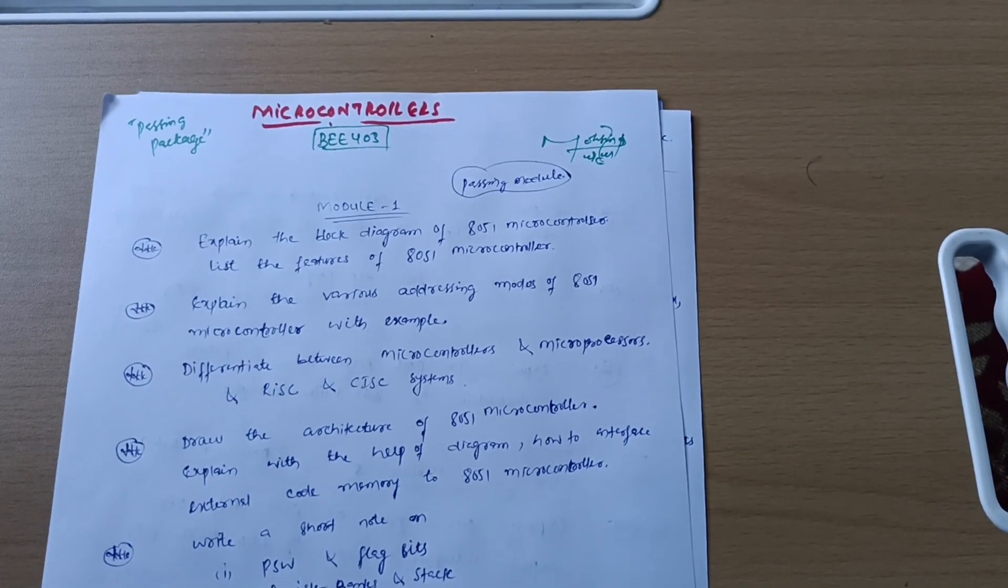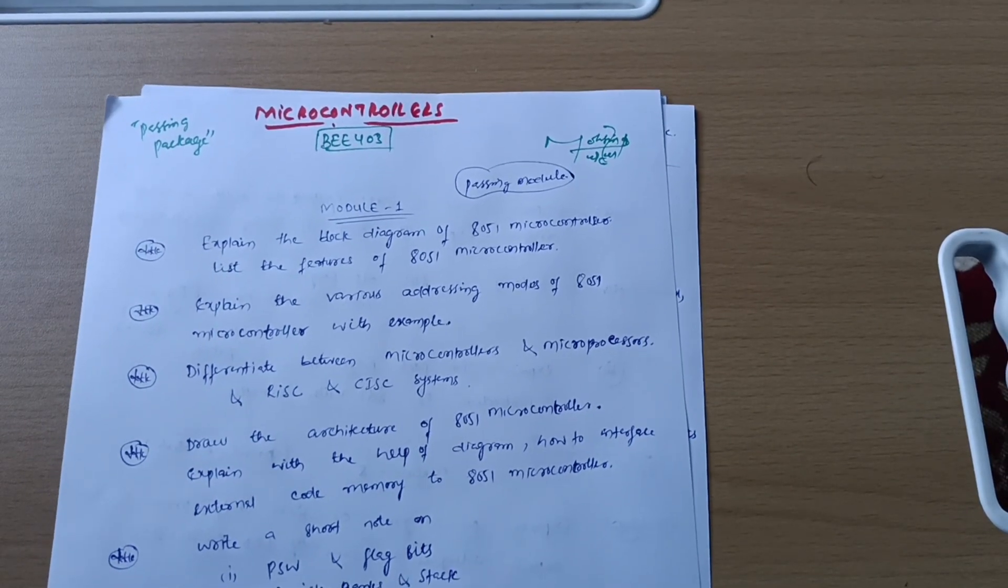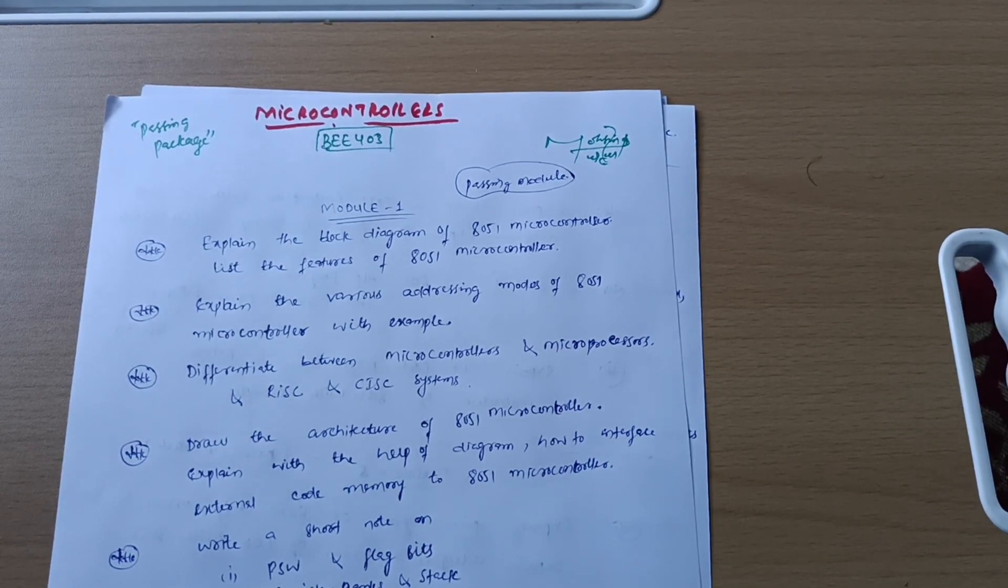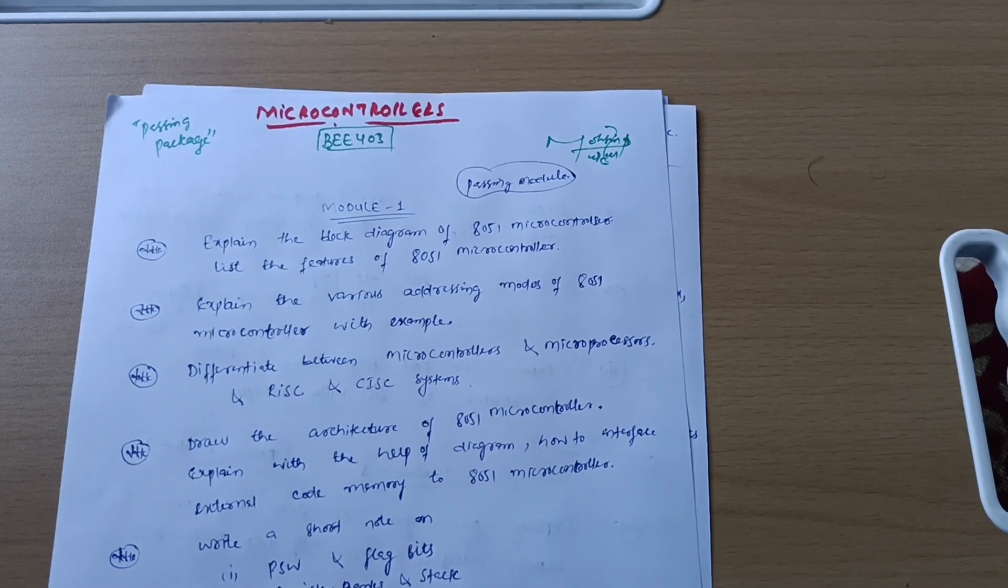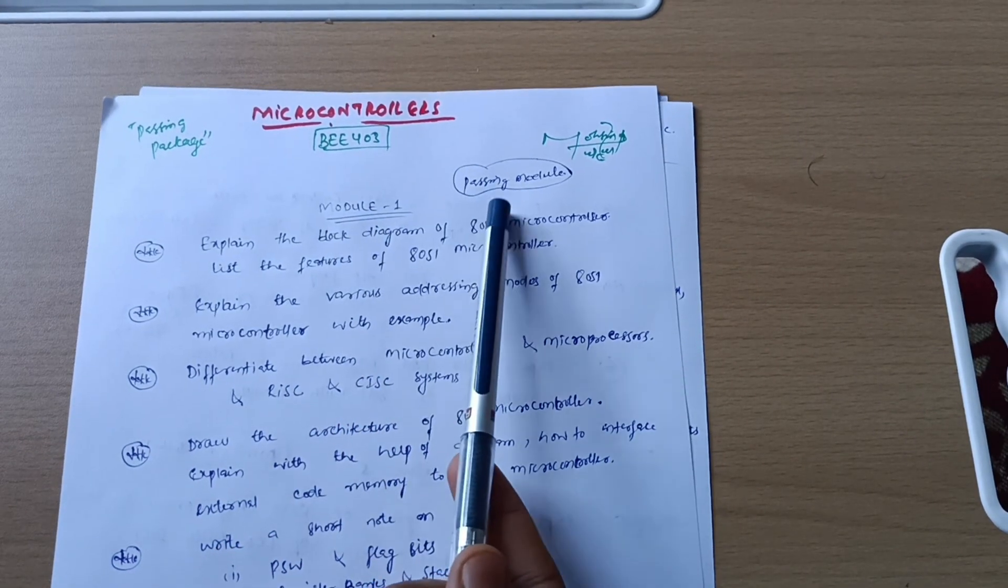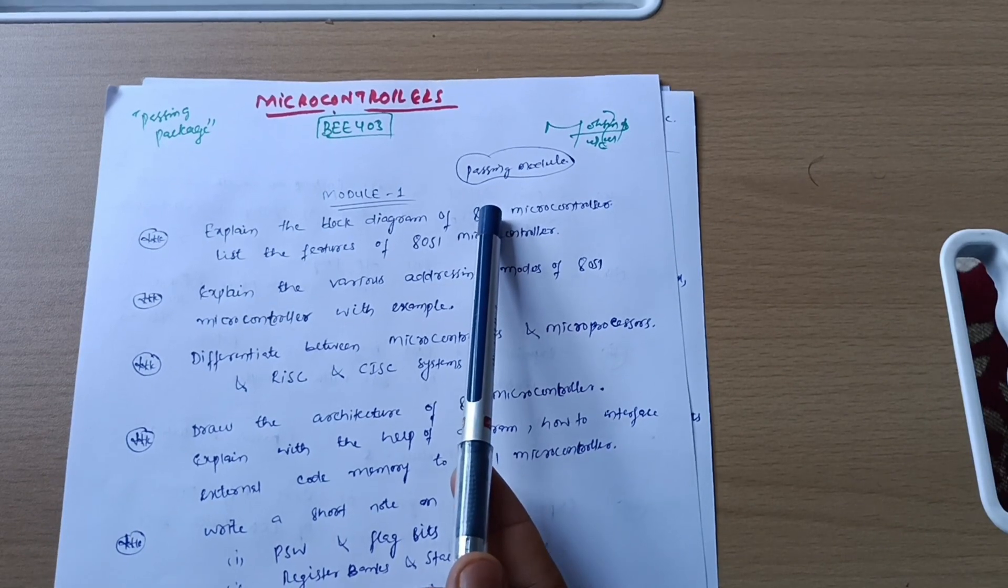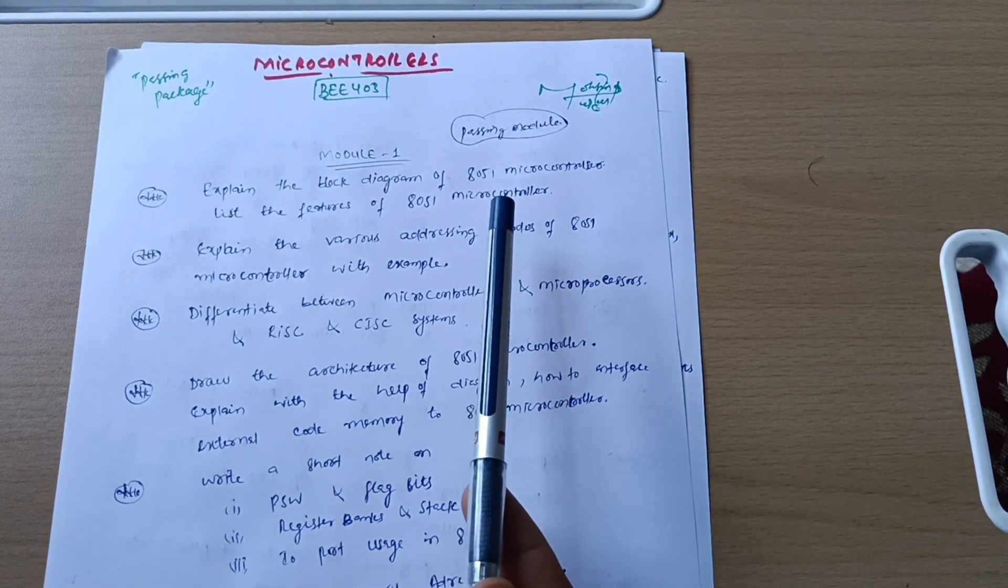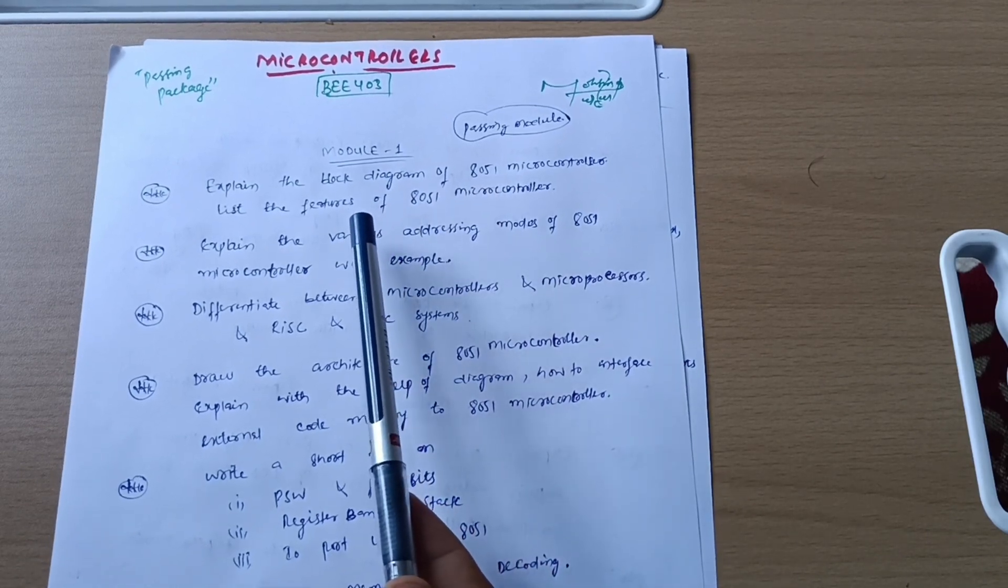Hello EE stream students, welcome back to my another video. Hope you are all doing well and preparing for your subjects. Today I am with the important questions and passing package for the subject Microcontrollers, subject code BE 403. There are three passing modules which I will discuss first, and these three modules should be at your highest priority.